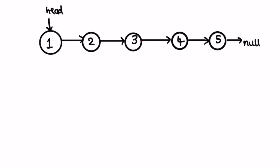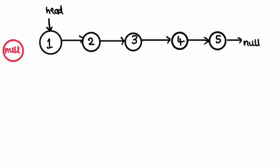When reversing connections between nodes, you're dealing with three nodes at a time. We create three pointers: previous, which holds null (because after reversing, the first node should point to null); current, which points to the head of the linked list; and next node, which points to the node after current. We run a while loop until current is not equal to null.